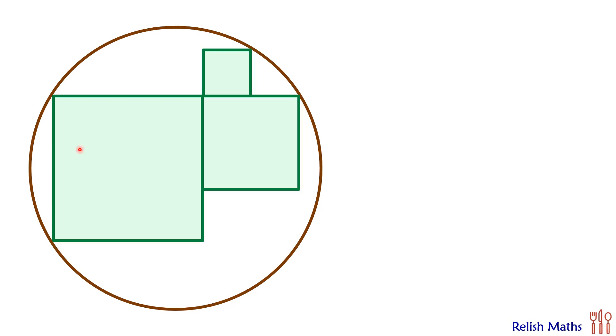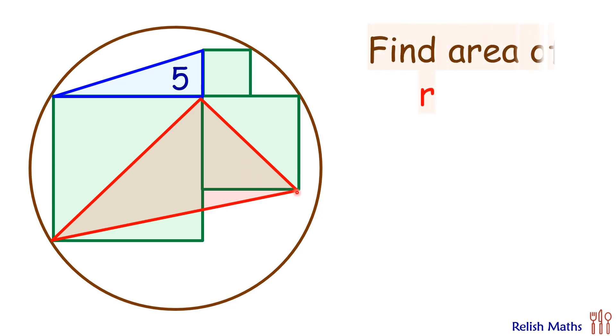Welcome back. In this question we have three squares inside a circle. A blue triangle is formed with area of five centimeter square. Joining the vertex of the green square a red triangle is formed. Using this limited data we have to find the area of red triangle.